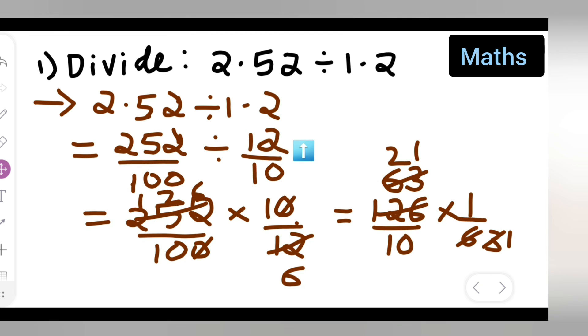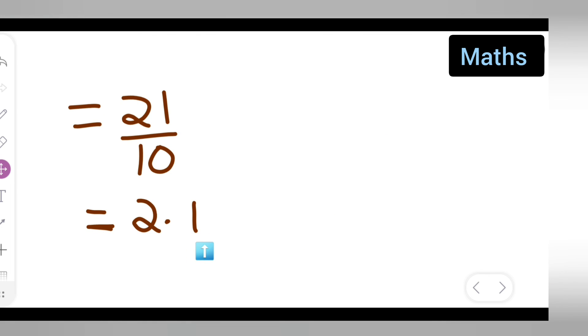So I hope you've understood how to divide 2.52 divided by 1.2. Your answer is 2.1, and thanks for watching. If any doubts or queries, you can comment below.